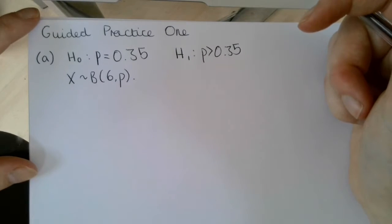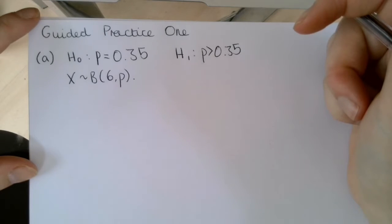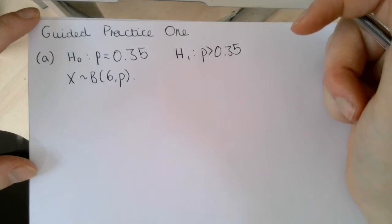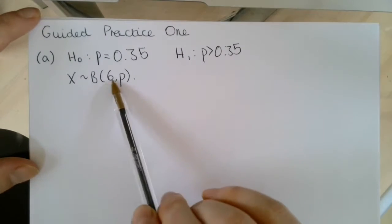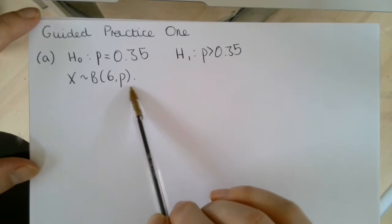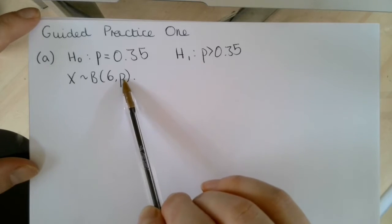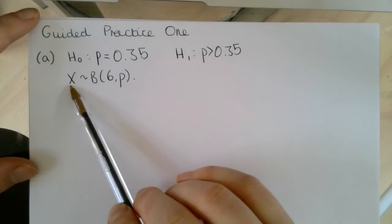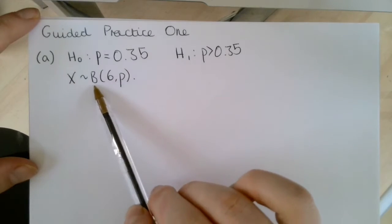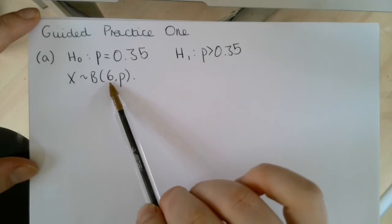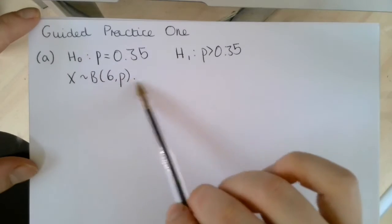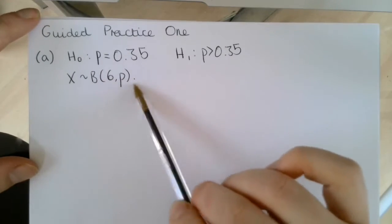This example is going to go through finding a critical region for a hypothesis test. We are told that a single observation is taken from a binomial distribution where n equals 6 and we have a parameter p. So x, our single observation, is binomially distributed where n equals 6 and we have the parameter p, which we are testing on.